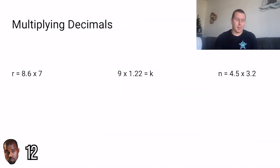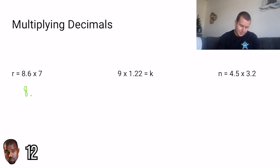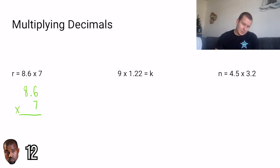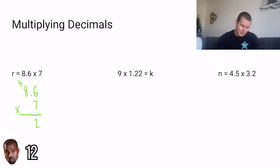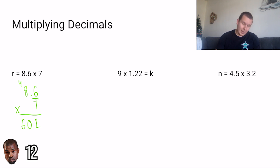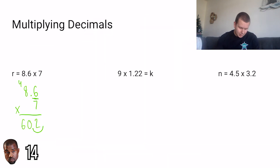Let's try this first problem. We have r equals 8 and 6 tenths times 7. 8 and 6 tenths has the most digits, so we're going to stack that number on top and put the 7 at the bottom. Remember we don't have to line up the decimals when we multiply with decimals — that's what makes it a little easier. Now we're going to ignore the decimal and multiply like normal. 7 times 6 would give us 42. 7 times 8 would give us 56 plus 4 would give us 60. Now we're going to check how many numbers are behind the decimal — looks like just one, so we scoop once, and we got 60 and 2 tenths.